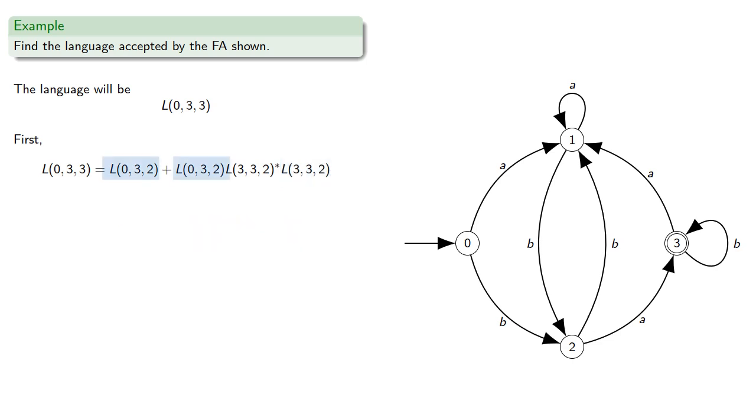Now, this requires l(0,3,2), so again, that's going from 0 to 3, not passing through anything higher numbered than 2. So we can go from 0 to 3, not passing through anything higher numbered than 1, or we can go from 0 to 2, loop, and then onto 3.